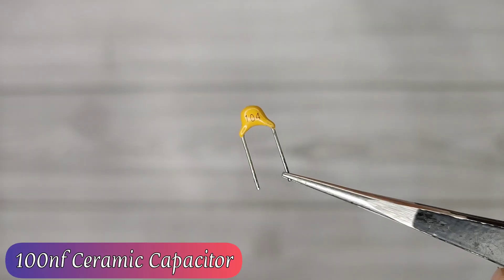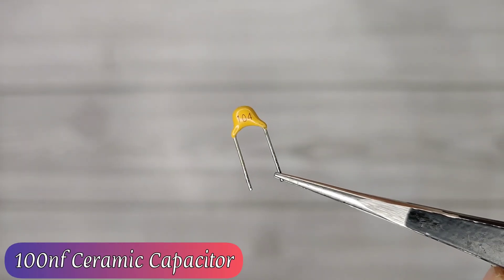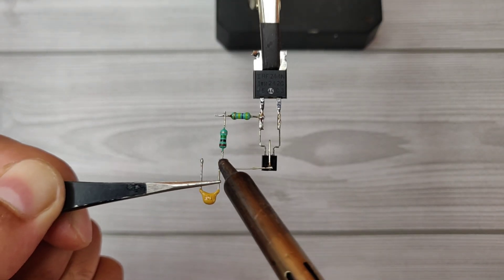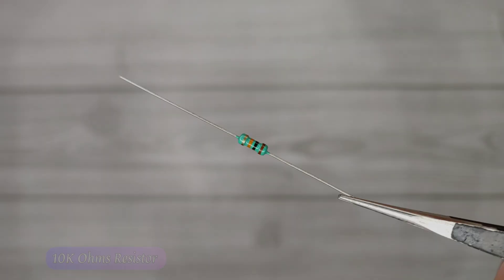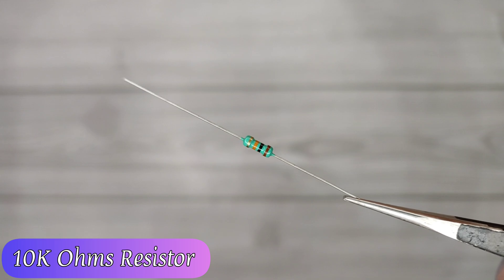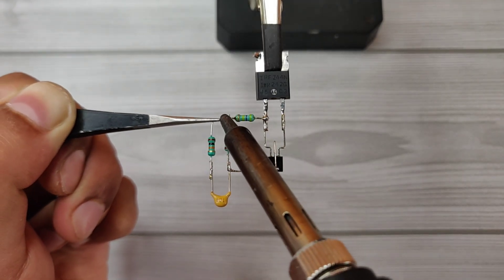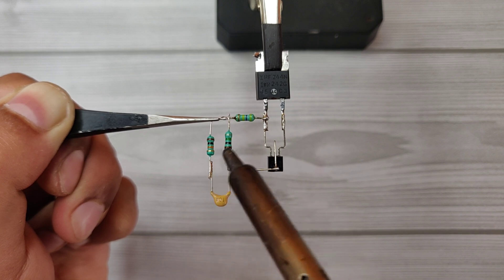Take 100nf ceramic capacitor, solder on base of transistor. Take 10k ohms resistor, solder between 470k resistor and ceramic capacitor.